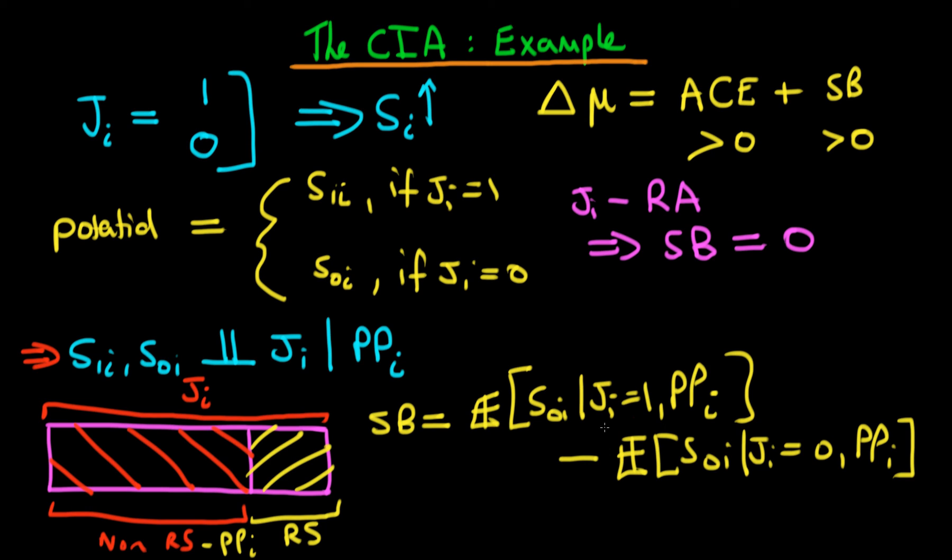And what that means is that S0i is completely independent of the value of Ji. So I can just change the second value of Ji to be equal to 1, and that's still valid. And in this circumstance, I hope you can see that both of these expressions are exactly the same, hence the selection bias is equal to 0.